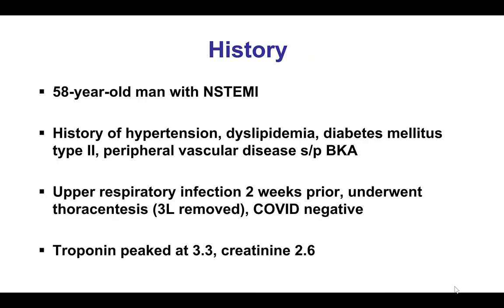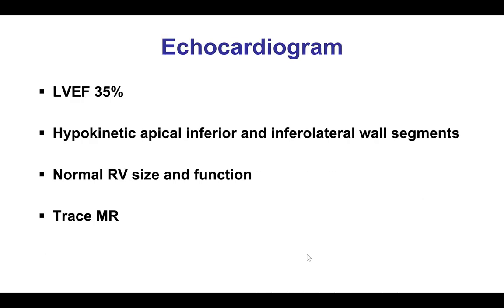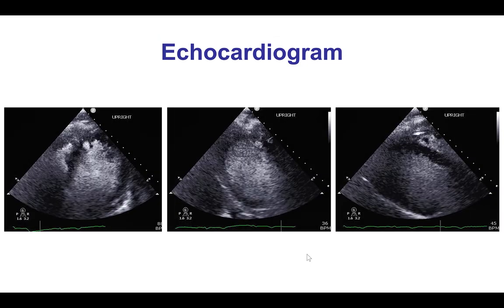The patient was a young man who presented with non-ST elevation myocardial infarction. He had diabetes mellitus as well as below-knee amputation. He did have a recent respiratory infection, but he was COVID-negative. His troponin peaked at 3.3 and his creatinine was 2.6, reflecting acute on chronic kidney disease. Echocardiogram showed an ejection fraction of 35% with multiple wall motion abnormalities, both inferior and inferolateral.